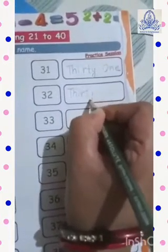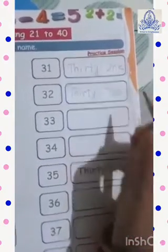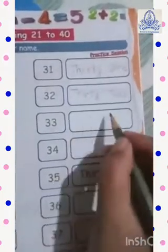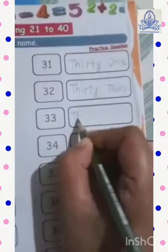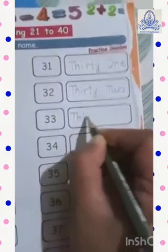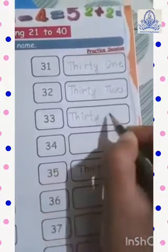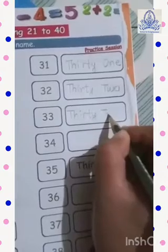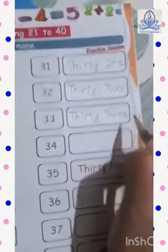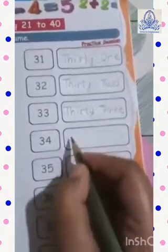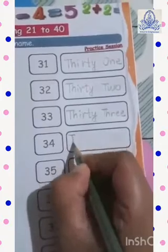Thirty-two: T-W-O, 2 — 32. Thirty-three: T-H-I-R-T-Y T-H-R-E-E — 33. Thirty-four: T-H-I-R-T-Y — 34.